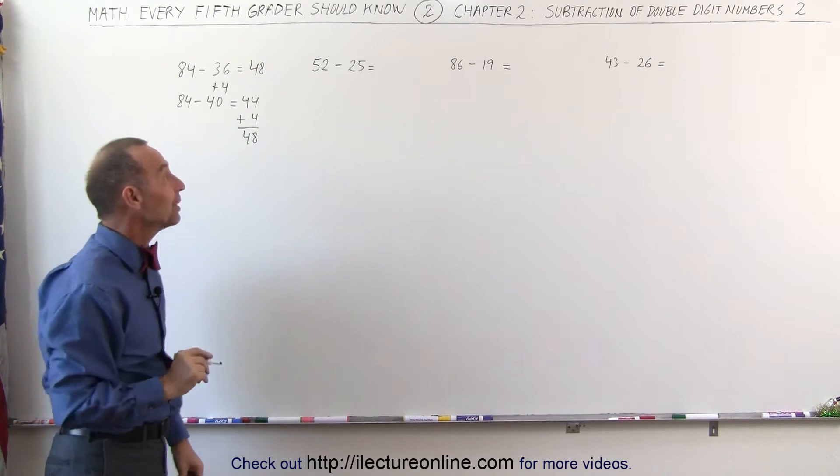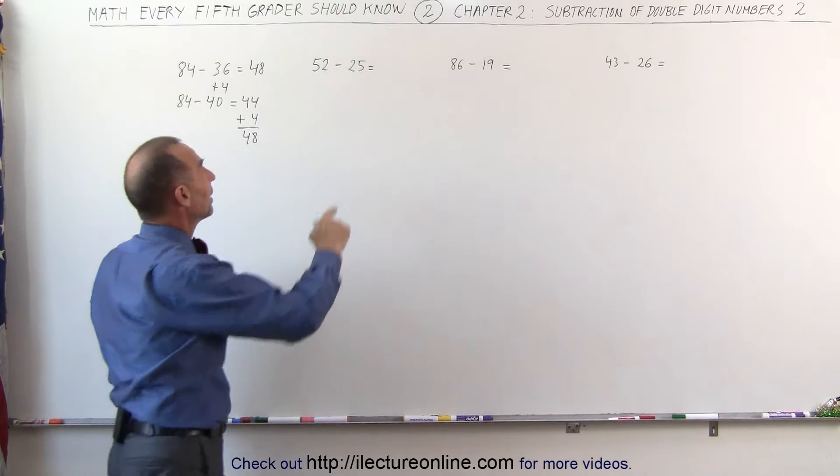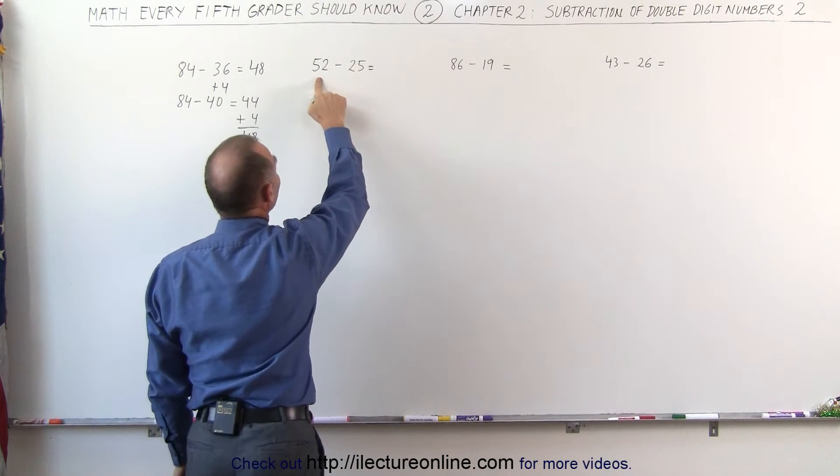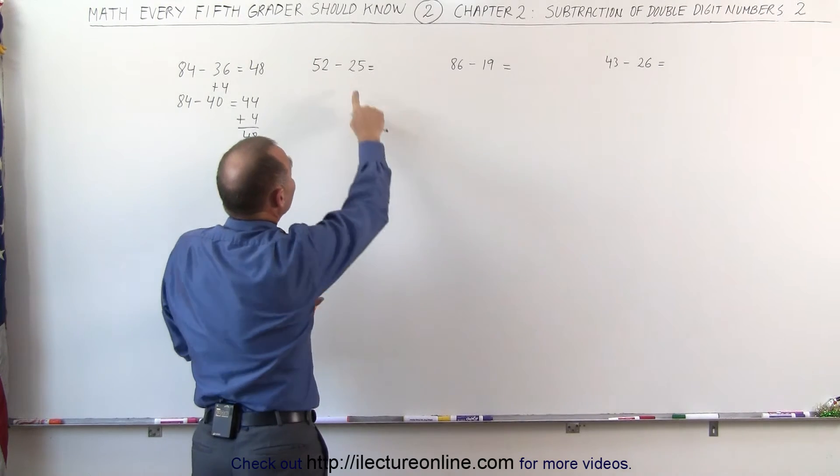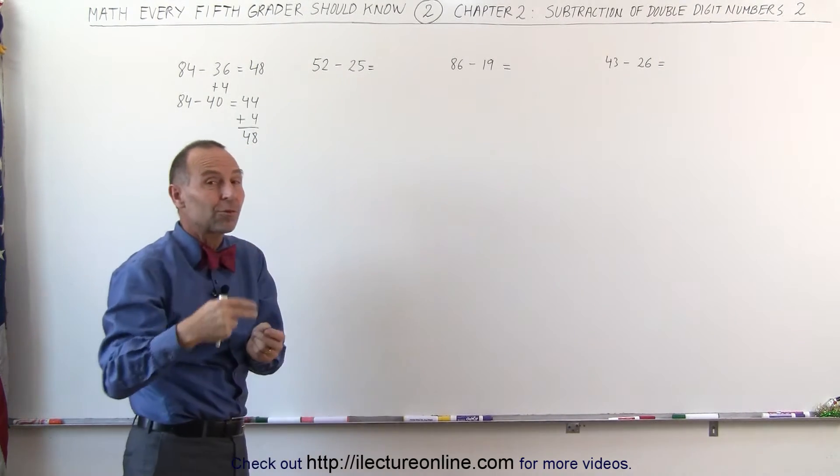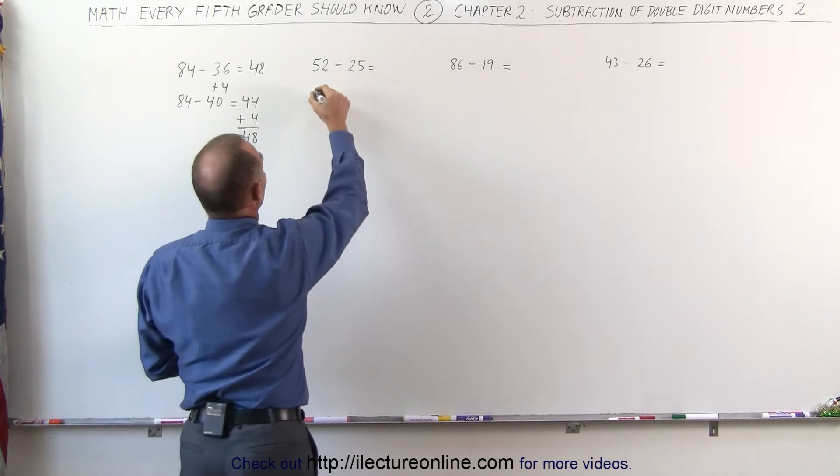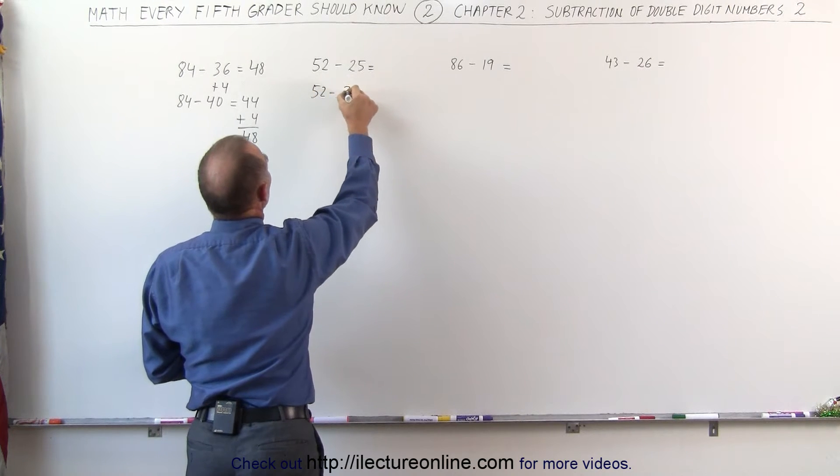Did you like that? I hope you did. Let's try it again. Here, I'm subtracting 25 from 52. I realize that 5 is bigger than 2, which makes it difficult to do. What I'm going to do is add to that. In other words, I'm going to subtract 5 more than I should. So I get 52 minus 30.